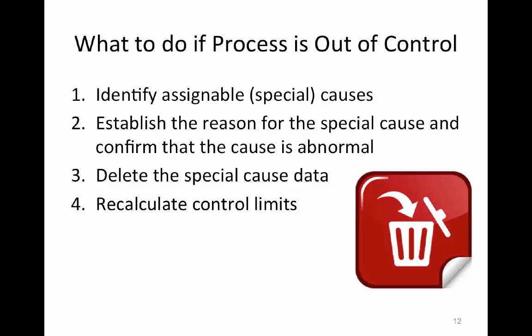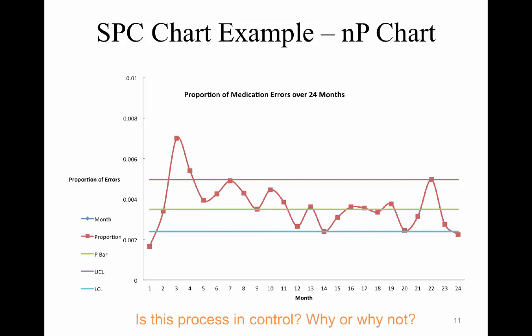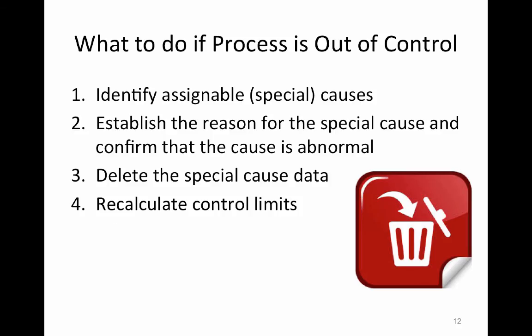Then what you would want to do is you'd want to delete that special cause data. So I would identify what caused this that was unusual. It has to be unusual. Otherwise, it's not necessarily a special cause. So what caused that? And then remove that data when you're calculating the control limits. And then you'd recalculate.